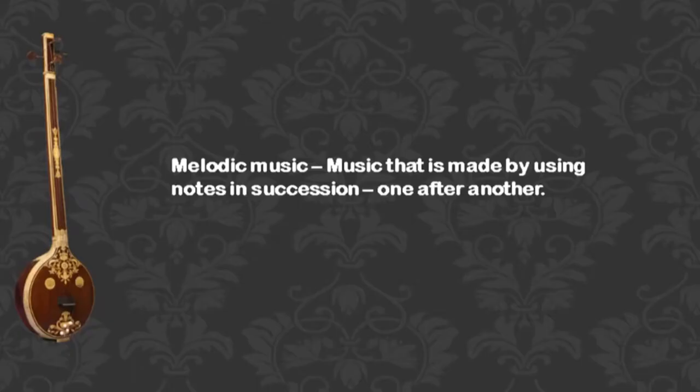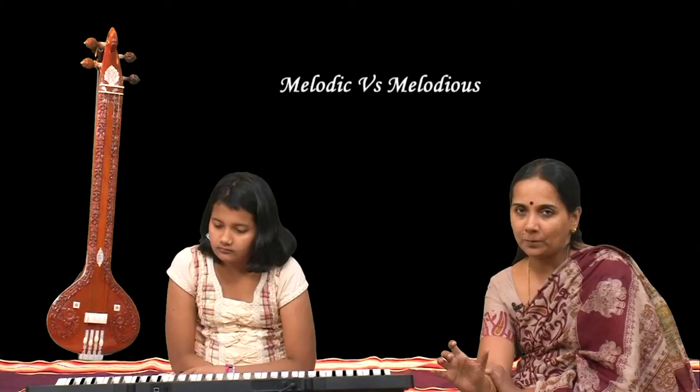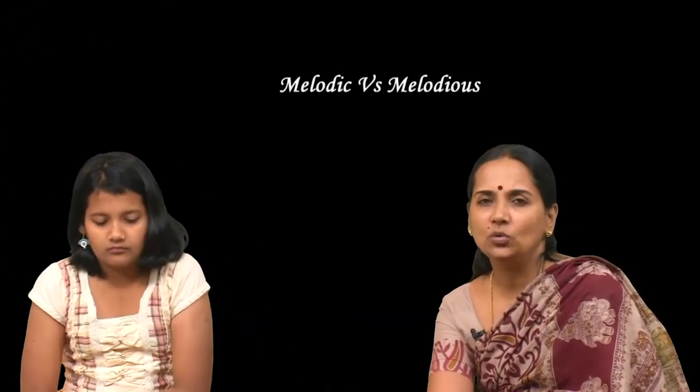But to call a form of music melodic is to describe the way the music has been made. A melody very simply is just a tune — it is a set of notes played in succession. And this is opposed to the other way of making music, which is to play notes simultaneously.